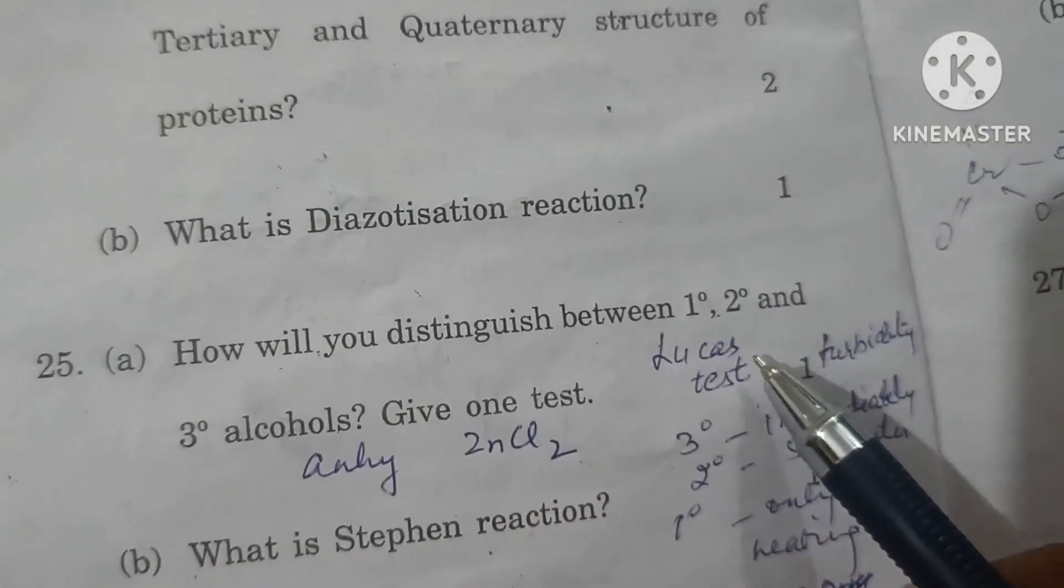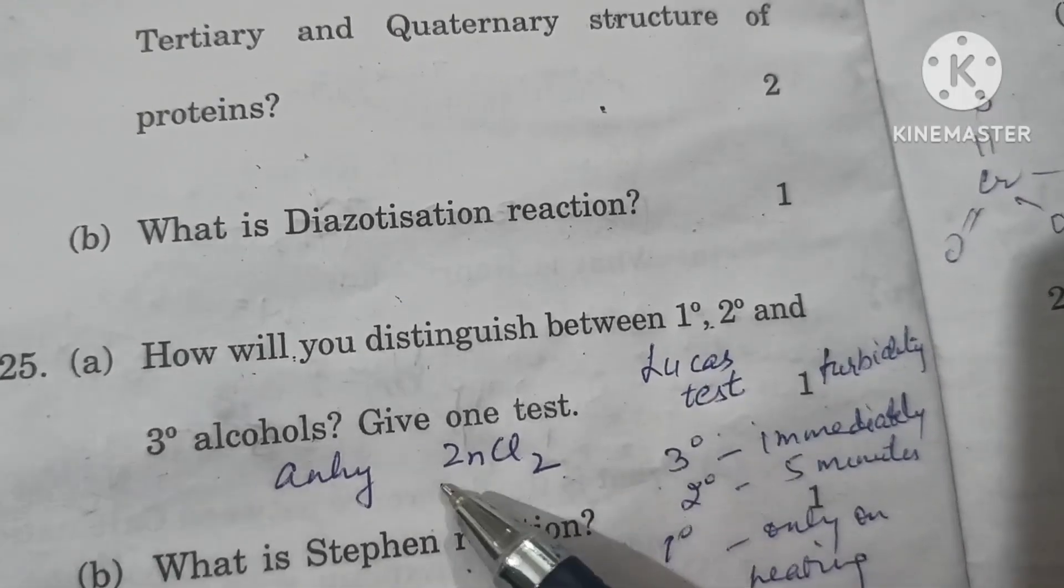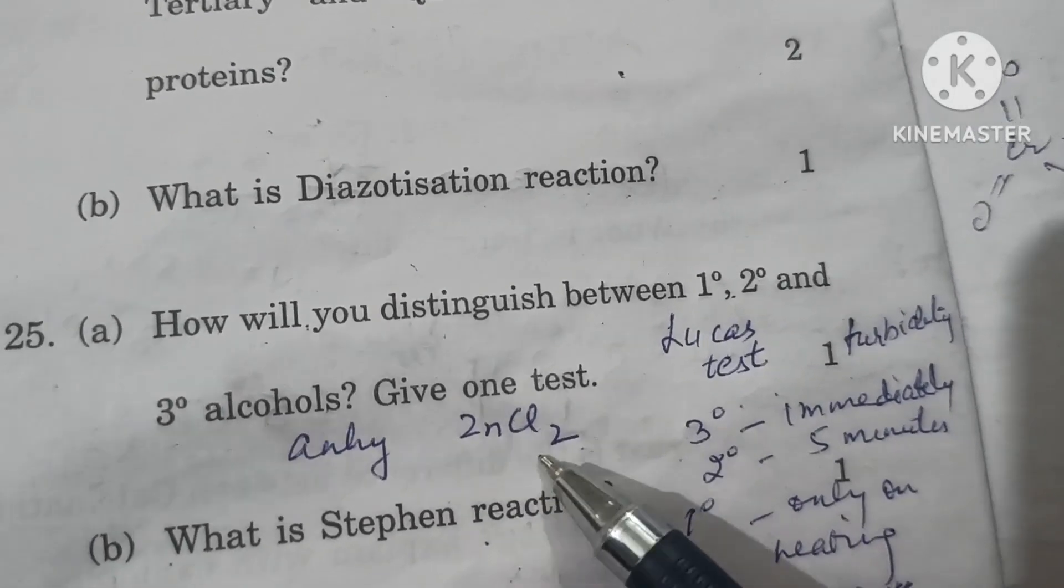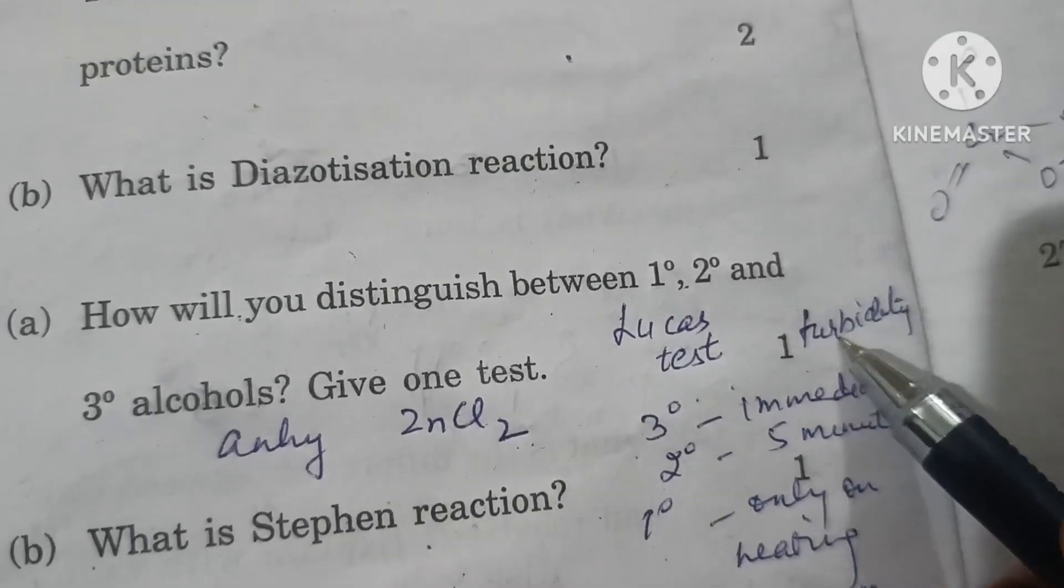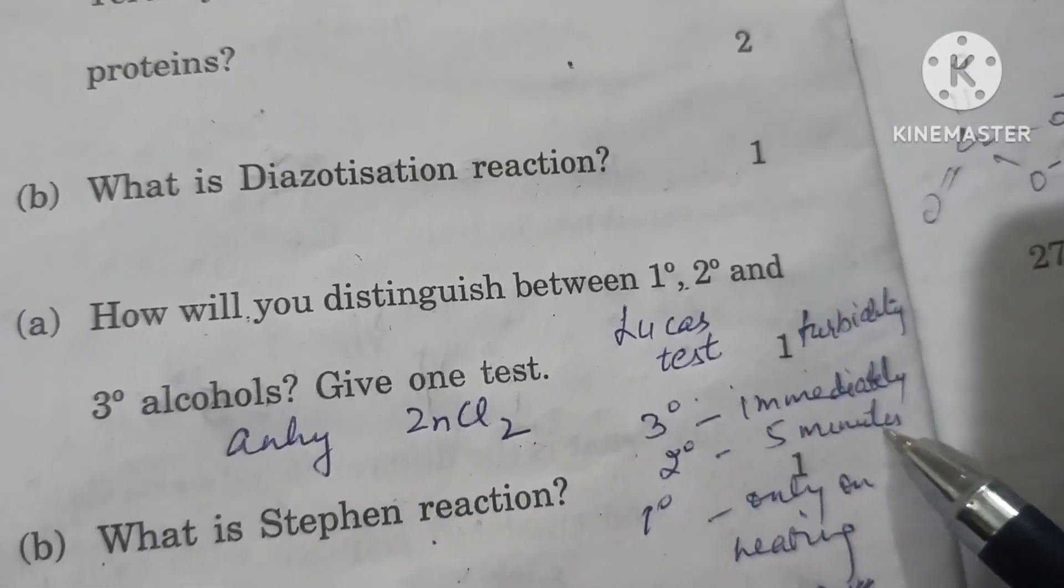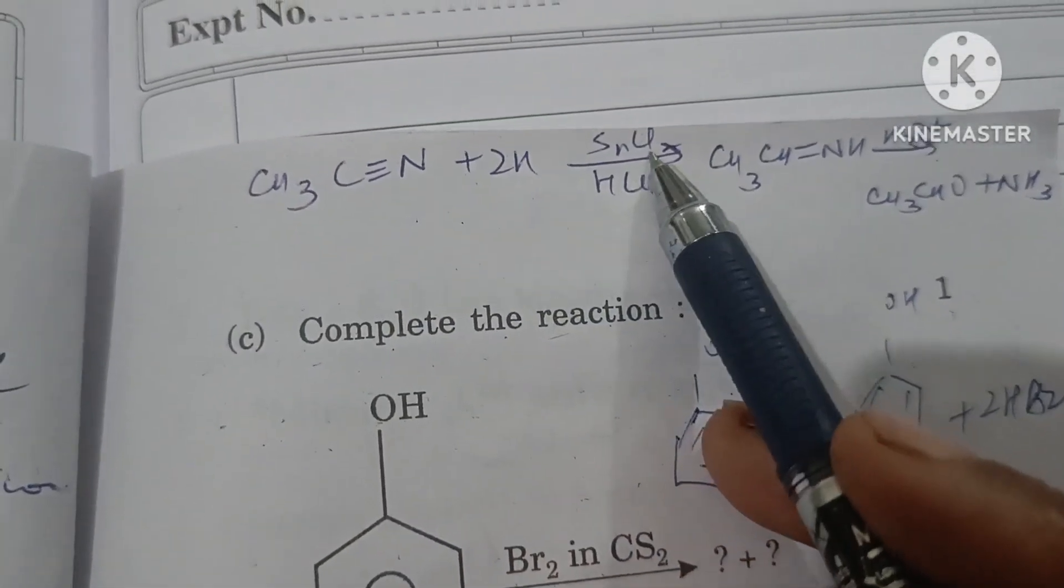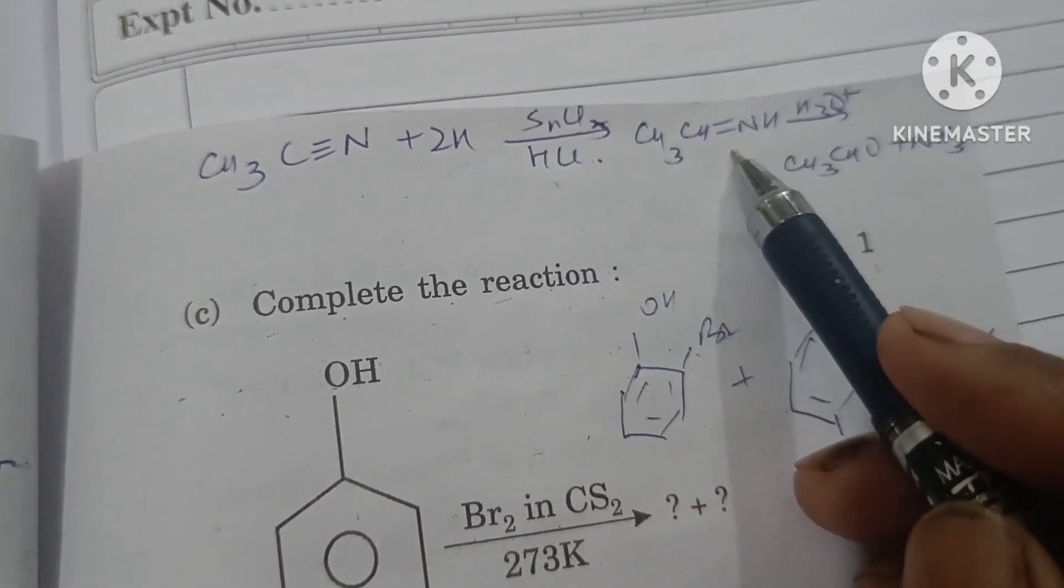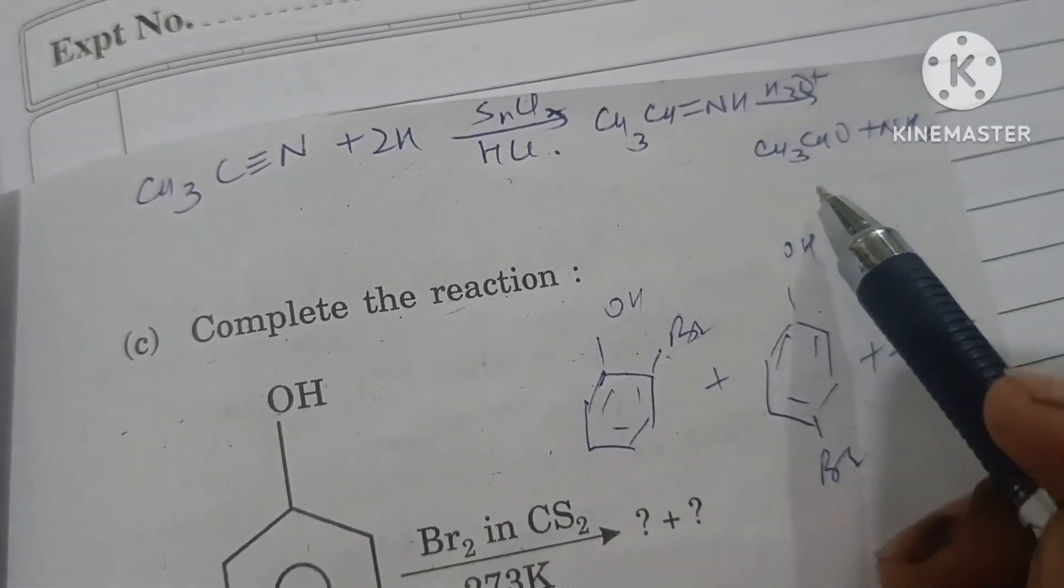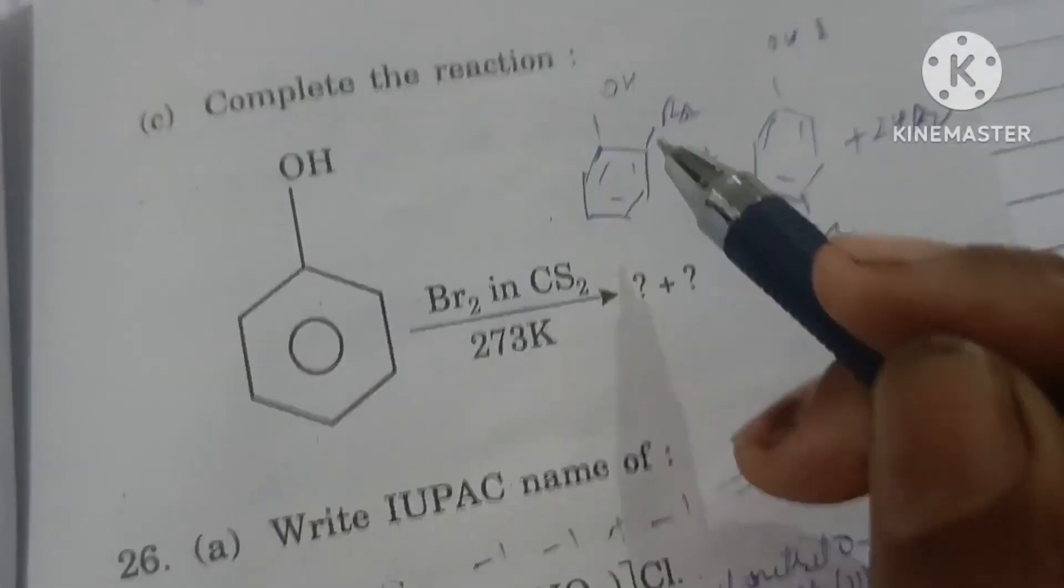How will you distinguish between primary, secondary, and tertiary alcohols? By Lucas test. In this, we use anhydrous zinc chloride as Lucas reagent with alcohol. Depending on their reactivity, tertiary alcohol gives turbidity immediately, secondary alcohol after five minutes, and primary alcohol only on heating. This is how we distinguish them. What is Stephen's reaction? When we reduce cyanides with stannous chloride and HCl in the presence of hydrogen, the aldehyde is formed. This reaction is called Stephen's reduction reaction.